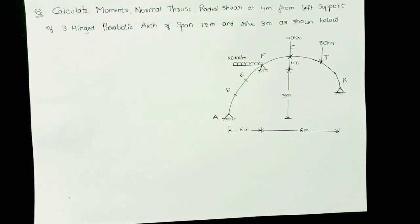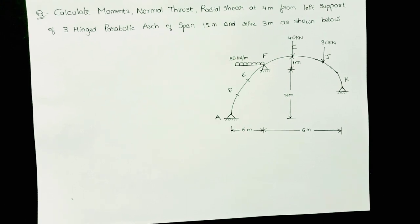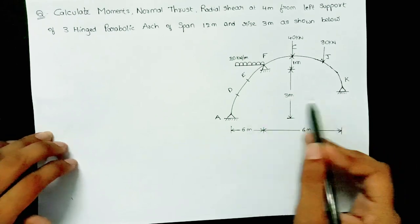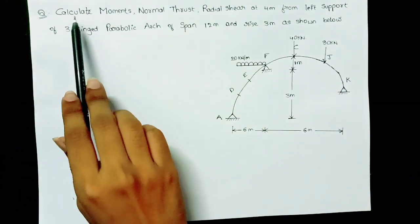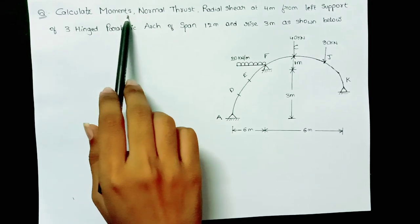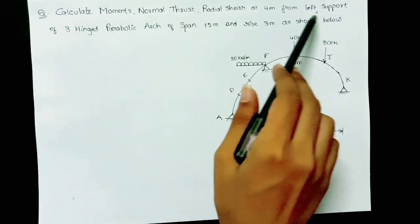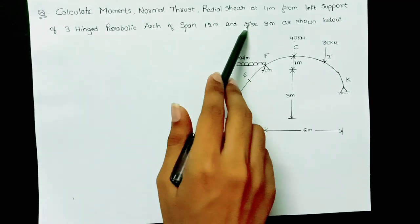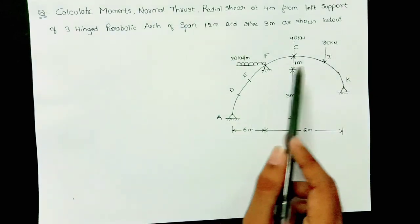Hello guys, welcome to my channel. In this video I am going to explain another problem regarding three-hinged parabolic arches. In my previous video I explained another problem regarding the same three-hinged parabolic arches — that was another model. In this problem we are asked to calculate the moments, normal thrust, and radial shear at 4 meters from the left support of a three-hinged parabolic arch of span 12 meters and rise 3 meters.